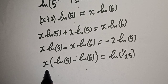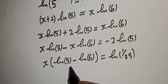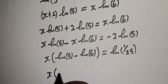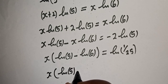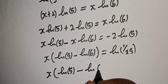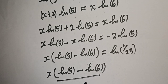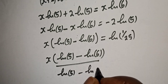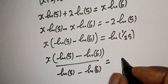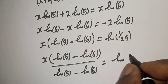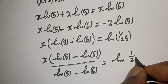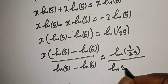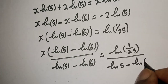Now let's divide both sides of the equation by natural log of 5 minus natural log of 6. So s times (natural log of 5 minus natural log of 6) divided by (natural log of 5 minus natural log of 6) is equal to natural log of 1 over 25 divided by (natural log of 5 minus natural log of 6). Therefore s is equal to natural log of (1 over 25) divided by natural log of 5 minus natural log of 6.